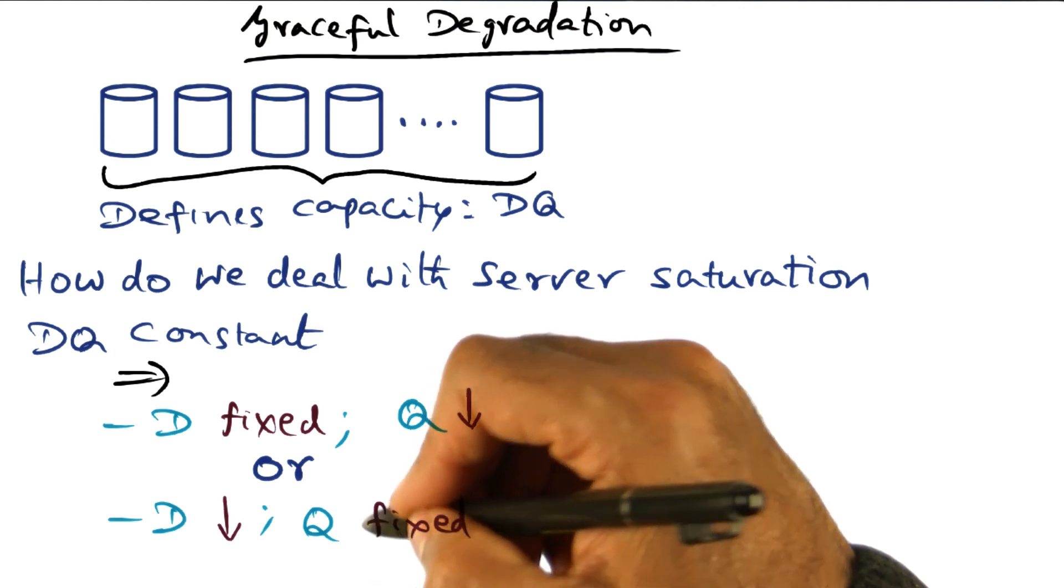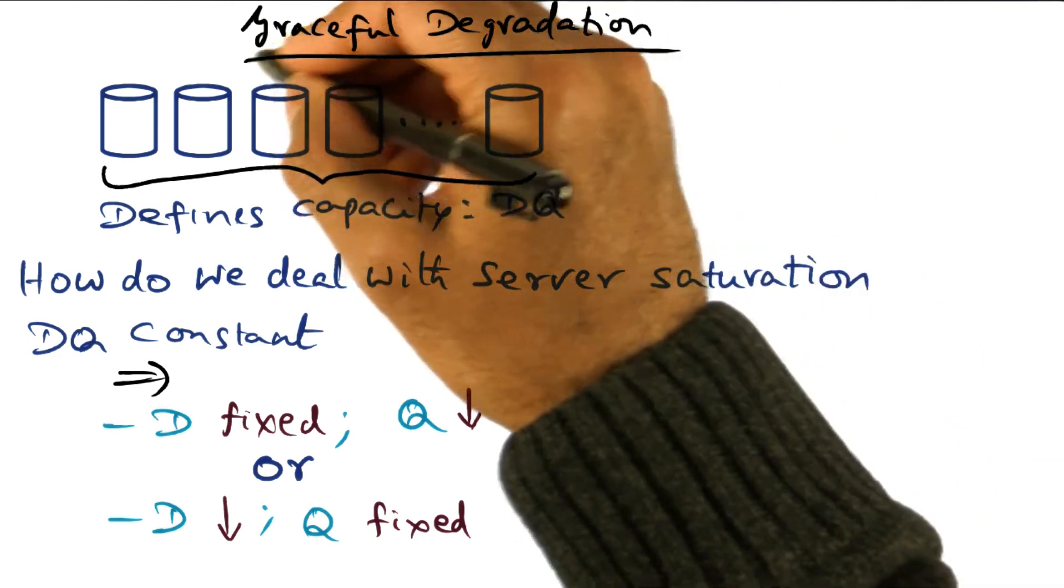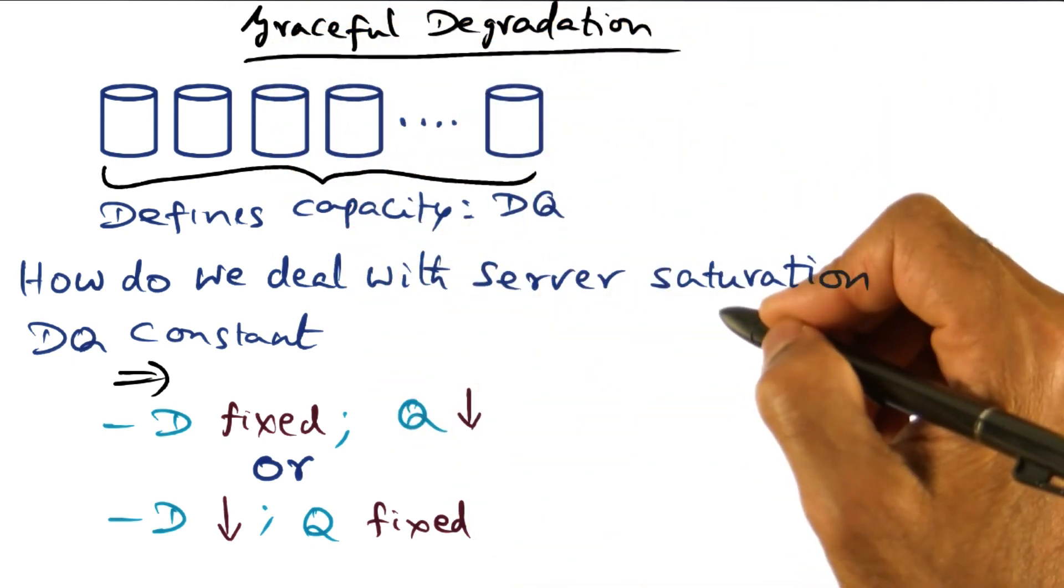So that's the idea behind the DQ principle, how it might be used for graceful degradation of service when the server is saturated.